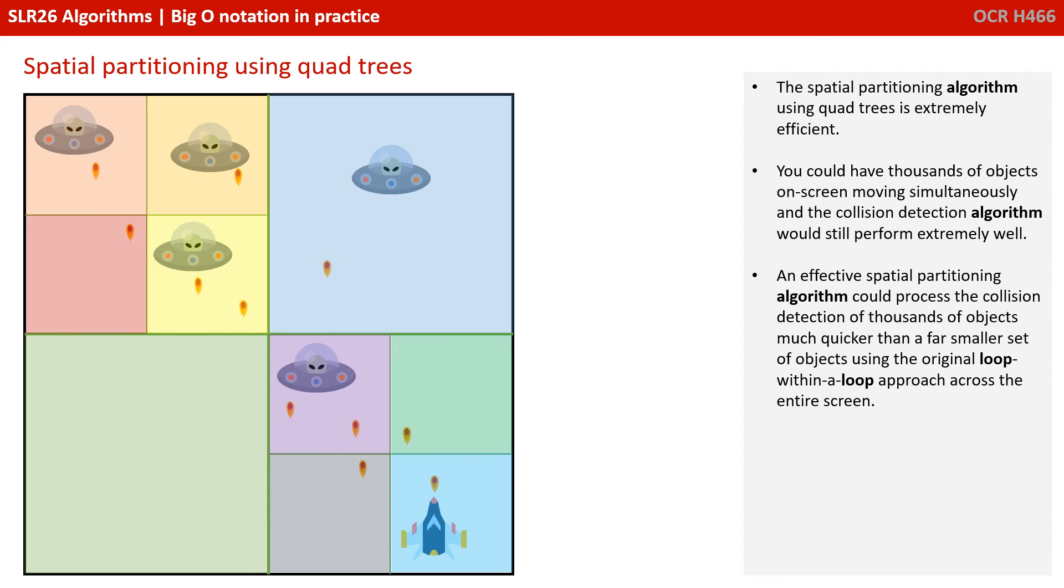The spatial partitioning algorithm using quadtrees is extremely efficient. You could literally have thousands of objects on screen moving simultaneously, and the collision detection algorithm would still perform extremely well. An effective spatial partitioning algorithm could process the collision detection of thousands of objects much quicker than a far smaller set of objects using the original loop within a loop approach across the entire screen.